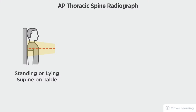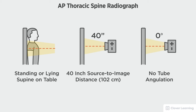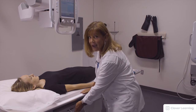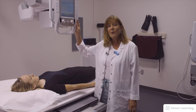In this view we will be demonstrating the AP thoracic spine. The AP thoracic spine should be performed with the patient standing at the upright bucky or lying on the table, with a 40-inch source to image distance and no tube angulation. We start today with the IR in the bucky tray, so we need all of our locks engaged.